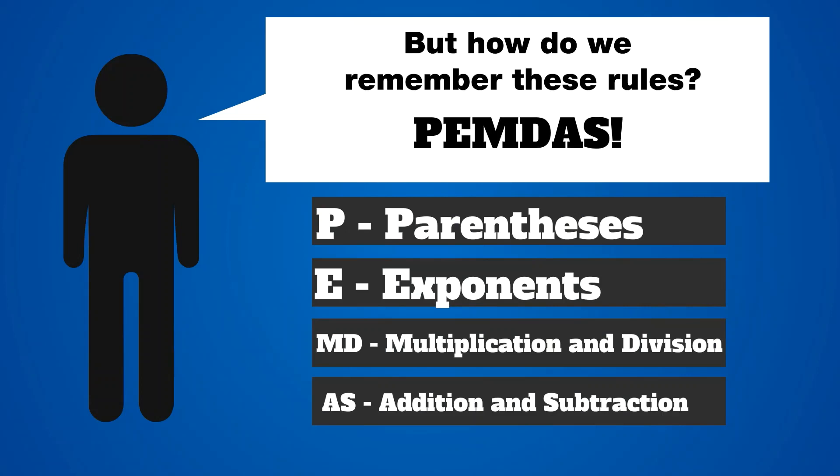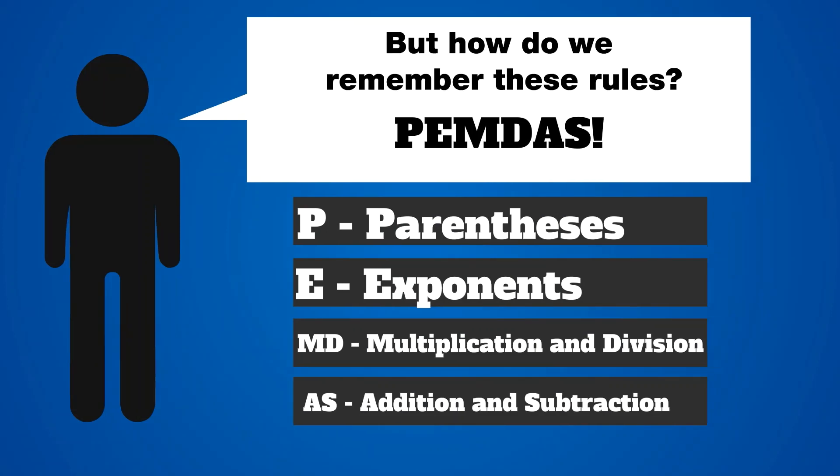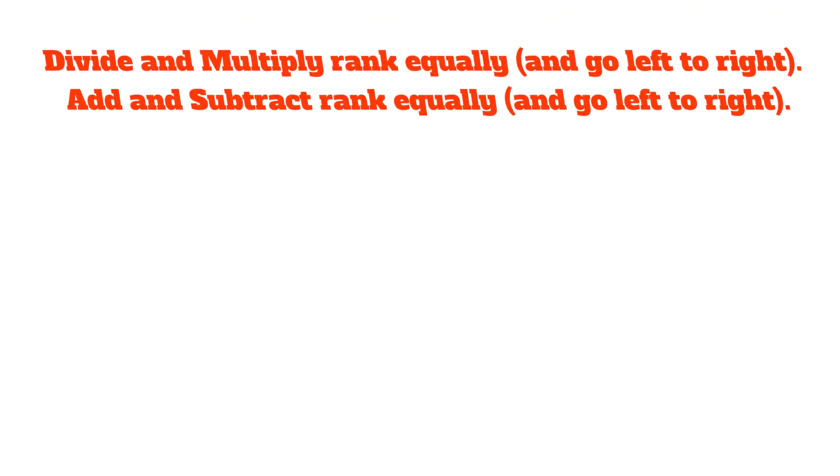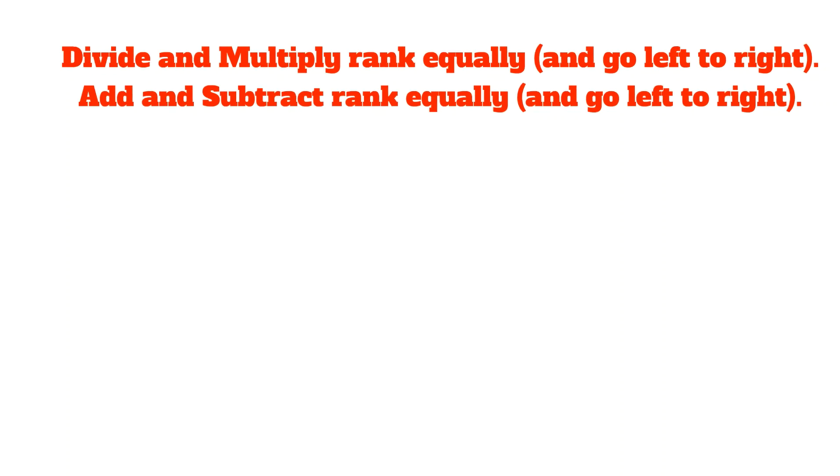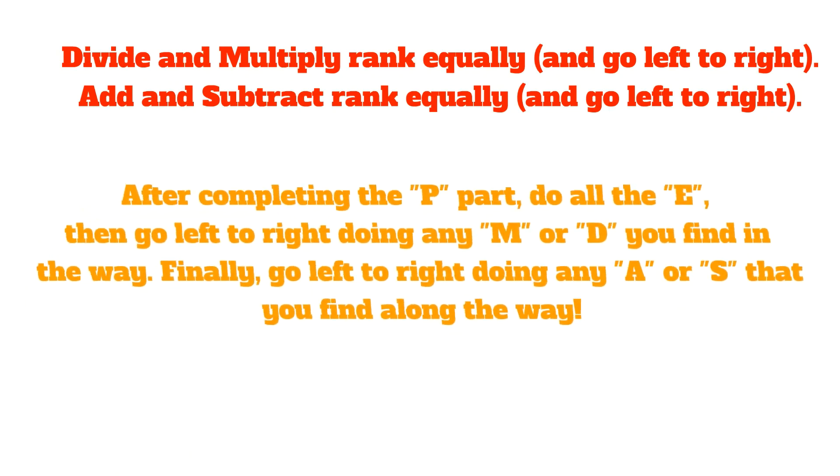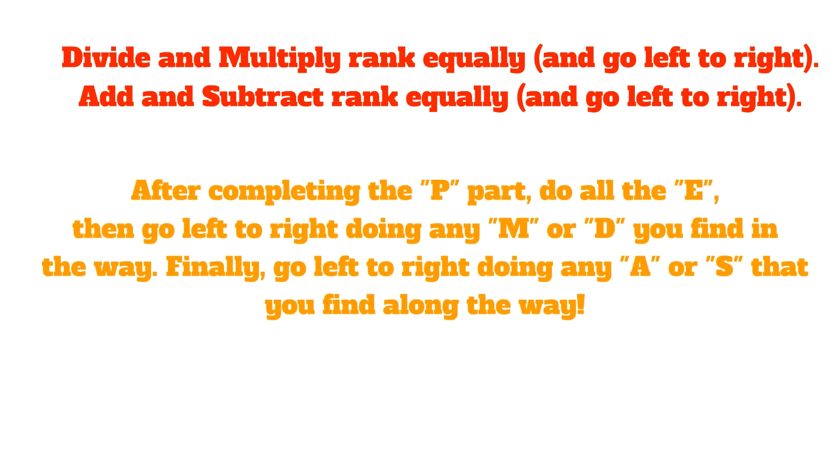But how do we remember all these rules? PEMDAS. The P stands for parentheses, E stands for exponents, MD stands for multiplication and division, and AS stands for addition and subtraction left to right. It's very important to note that divide and multiply rank equally, and they just go left to right in the order that they come up in. And add and subtract rank equally, and they just go left to right in the order that they come up in.